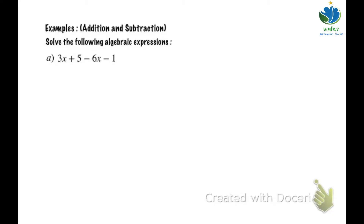Example. Solve the following algebraic expressions. Example A. Now, the first step is to arrange the like terms. Here there are two pairs of like terms. The first pair is 3x and 6x, and the second pair is 5 and 1.